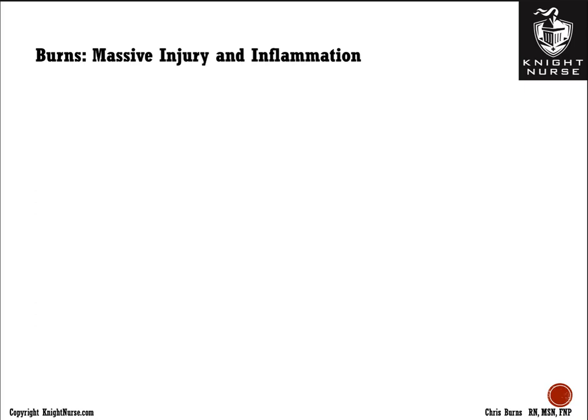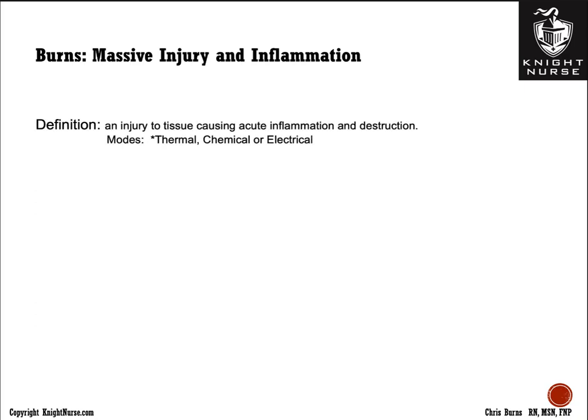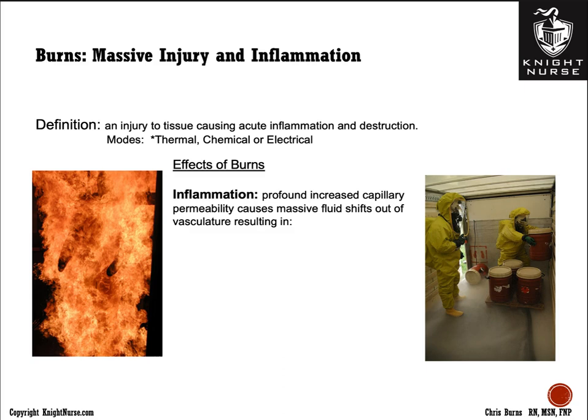Burns are massive inflammation. Any tissue damage from a burn — caused by thermal heat, chemical burns, or even electrical burns — can cause the manifestations of burns. The effects are massive inflammation, which causes increased capillary permeability and vasodilation, and fluid leaves the vascular compartment and shifts into the interstitial fluid.